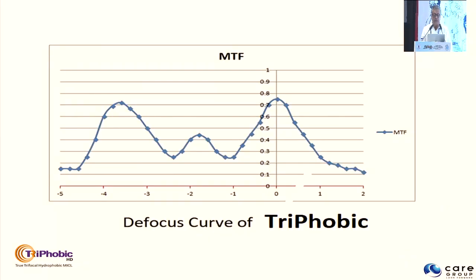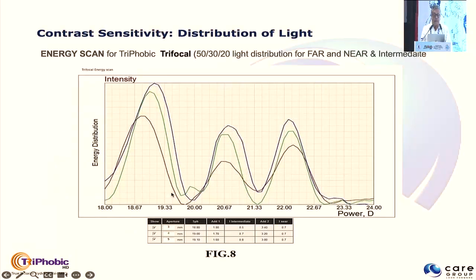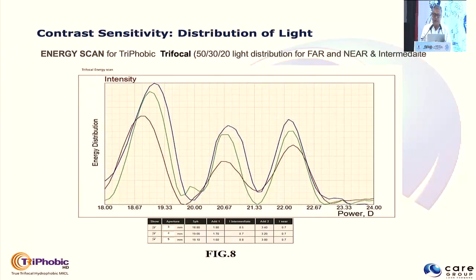Looking at the defocus curve of the trifocal IOL, you can see there are three humps — one for distance, one for intermediate at around 1.5 to 1.8 diopters, and another hump at around 3.5 diopters. Looking at the contrast sensitivity and energy scan for the trifocal, the light diffusion distribution is 50, 30, 20 for far, near, and intermediate.